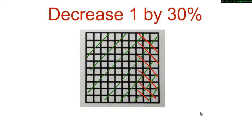Count the number of squares you are left with. We are left with 70 squares. So, our answer is 0.7. Is 0.7 less than 1? Have we decreased 1 by 30%? Is 0.7 the same as 1 minus 0.3?